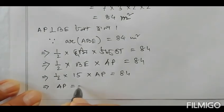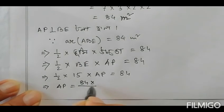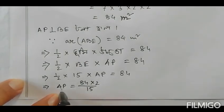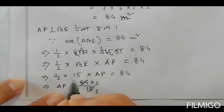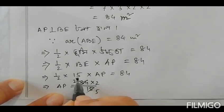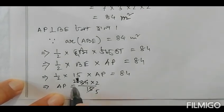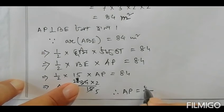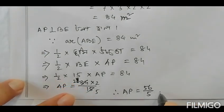So AP is equal to 84 divided by 15, with G equal to 15. AP works out as: 84 times 2 divided by 15, which equals 168 divided by 15, simplified to 56 by 5 meters.